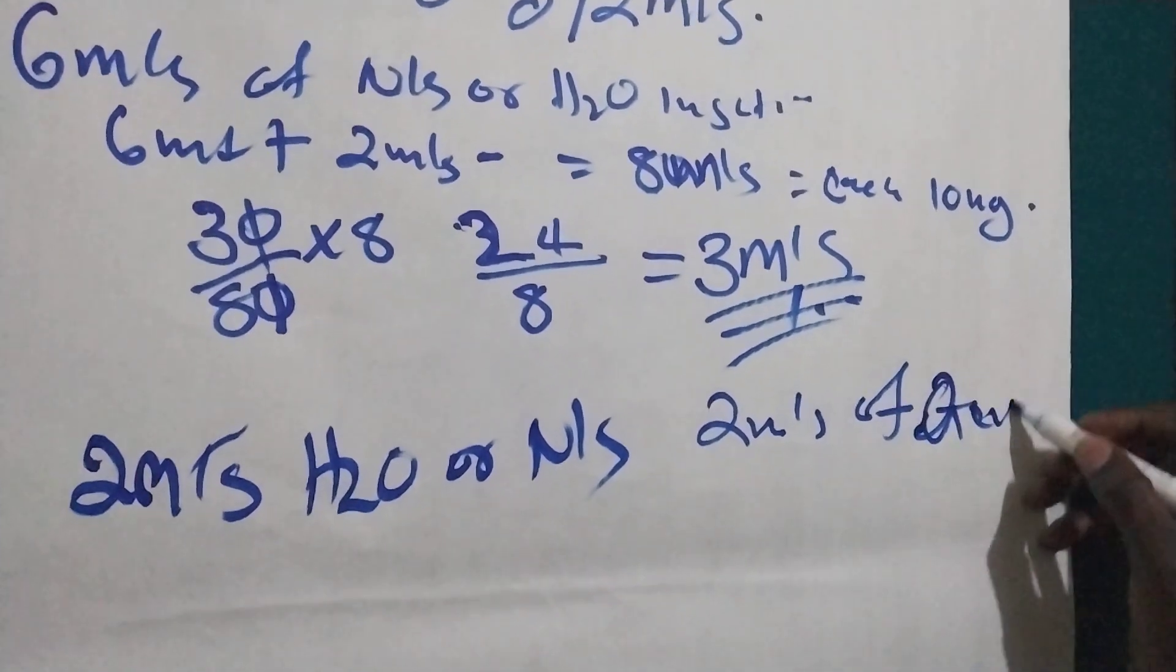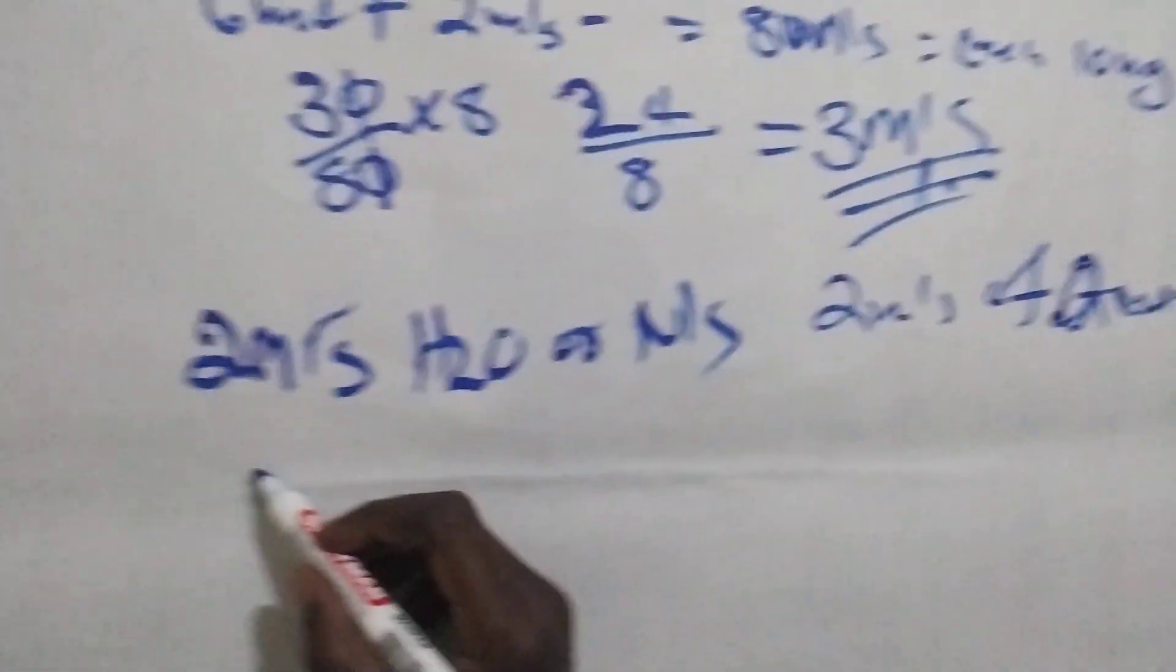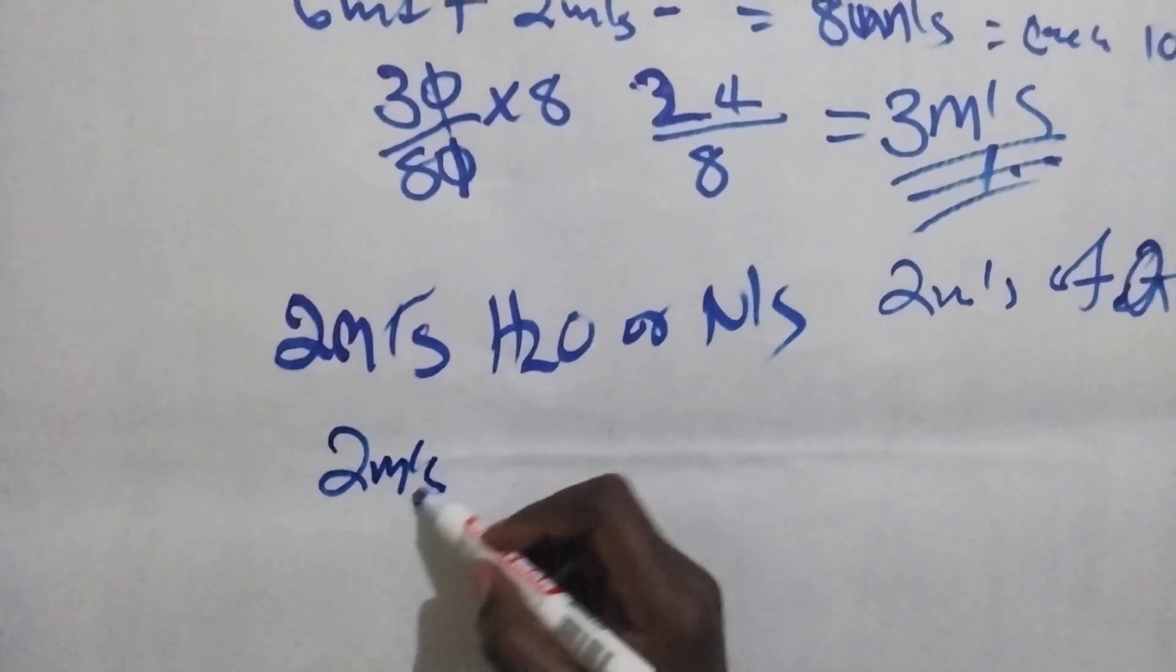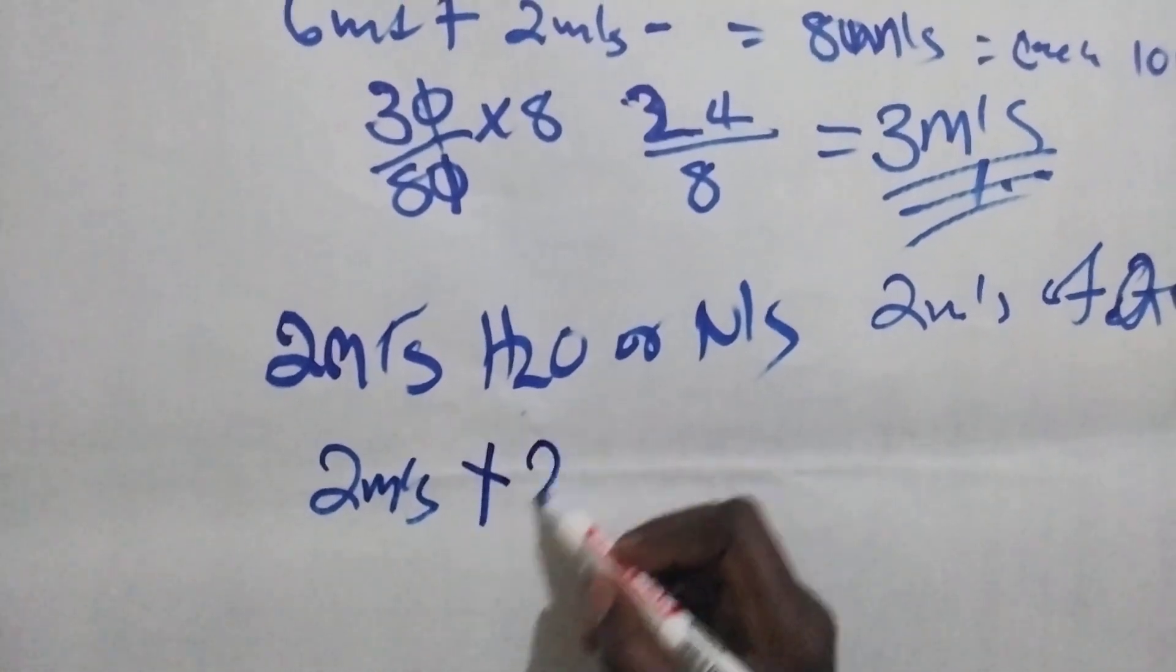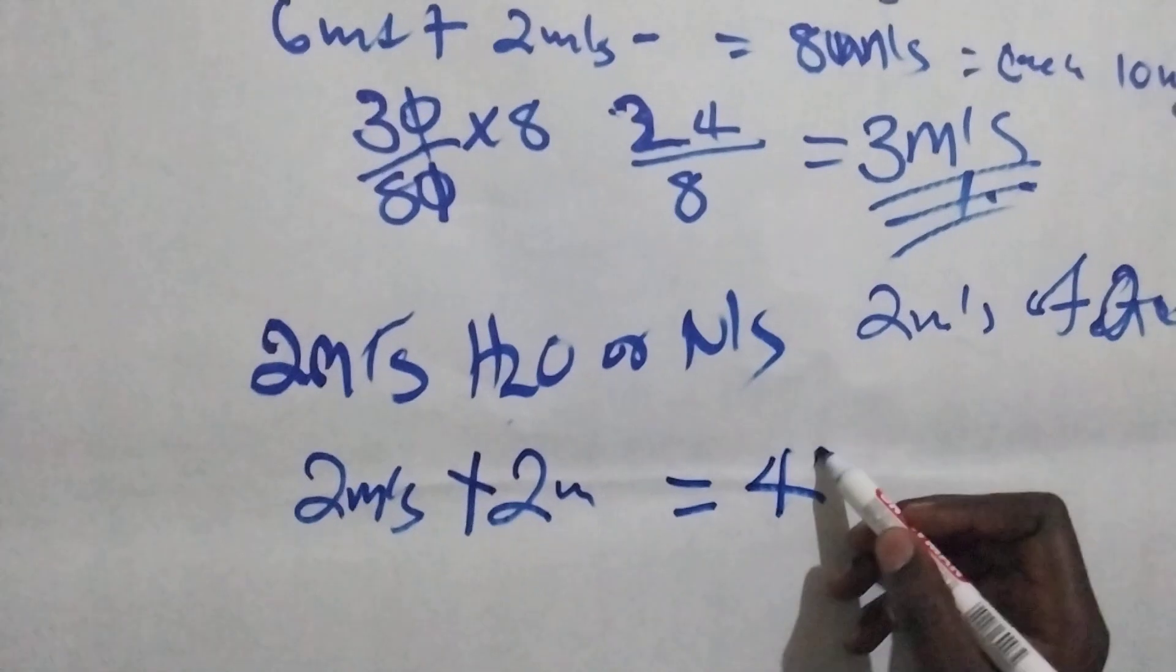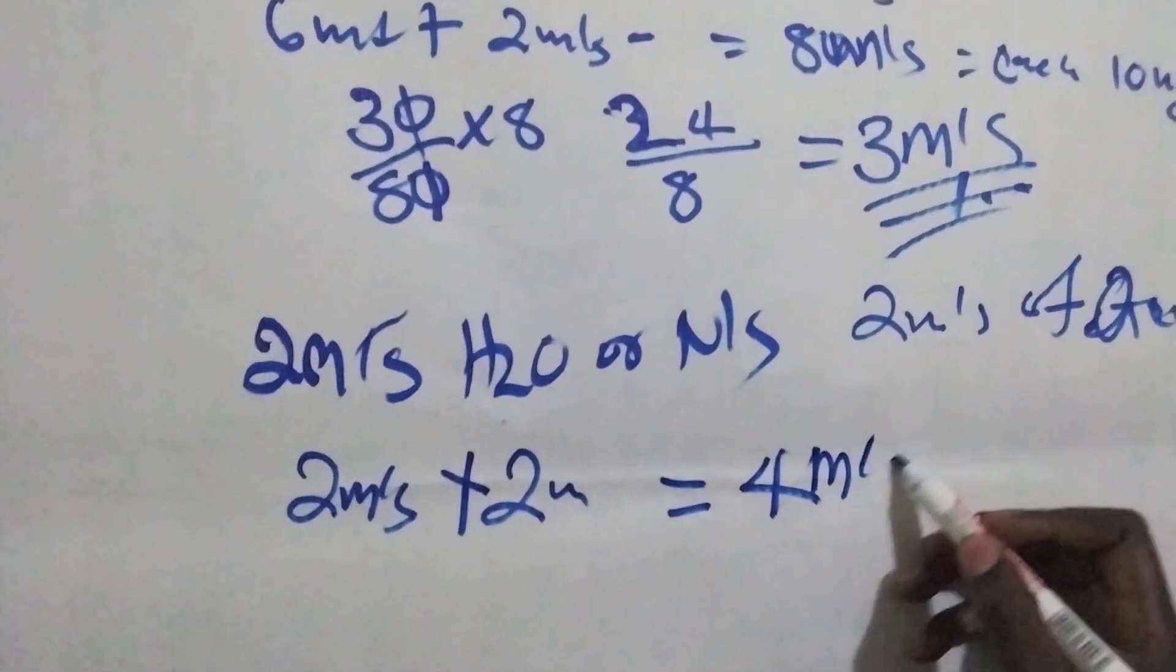of gentamicin. So we are going to add 2mLs of water for injection or normal saline plus 2mLs of gentamicin, so our dilution is 4mLs.